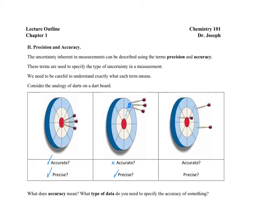In the third round of darts, none of the darts hit the bullseye, and all the darts are far away from each other. Not only have the darts not hit the bullseye, but they are not close together either. This is neither accurate nor precise.